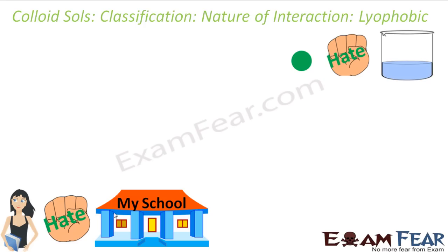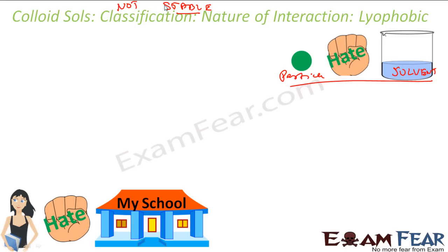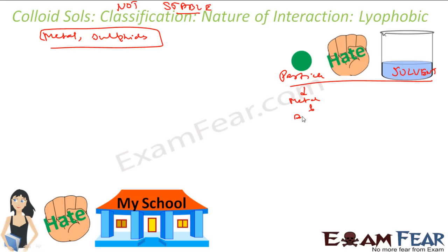Next is lyophobic — 'I hate my school.' If you hate your school you won't be stable; similarly, lyophobic particles hate their solvent. Since they hate their solvent, they are not stable. Examples are metals and their sulfides — metal sulfides — as particles. When you mix them in a dispersion medium, you won't easily get a colloidal solution because these metals or sulfides don't love the solvent.